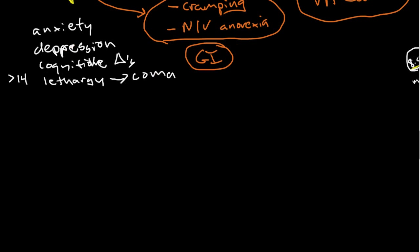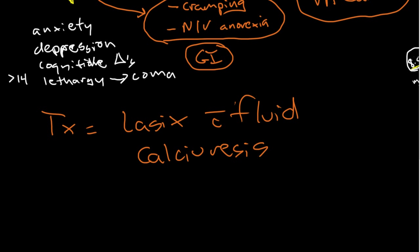Those are the signs and symptoms to look out for. If you have mental status changes, if you have a patient complaining of cramping, nausea, vomiting, or anorexia, and if you're seeing rhythm disturbances in the heart, think about checking a calcium level. If it's elevated, the simplest acute treatment is to give fluid and Lasix because this will cause a calciuresis. We will spill calcium.